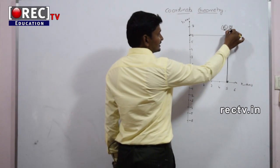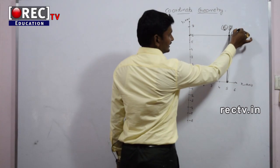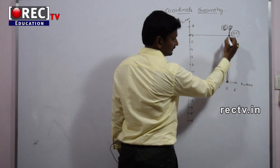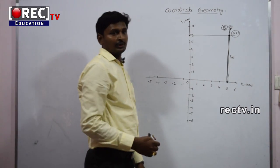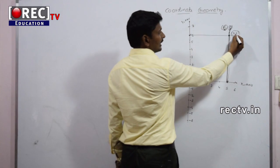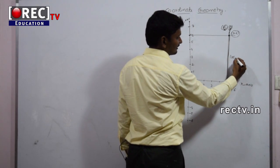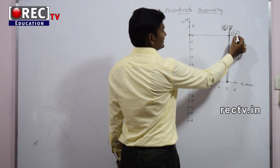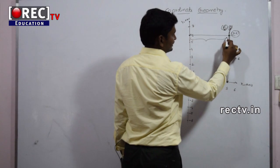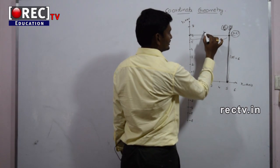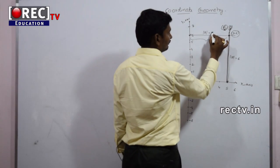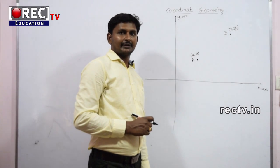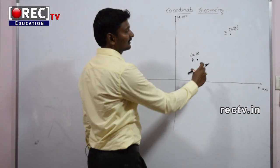The distance of the point (5, 6) from the X axis is |Y|, which equals 6 units. And the distance of the point (5, 6) from the Y axis is |X|, which equals 5 units. Now we are finding the distance between any two points on the coordinate axis — in other words, the length of the line segment AB.